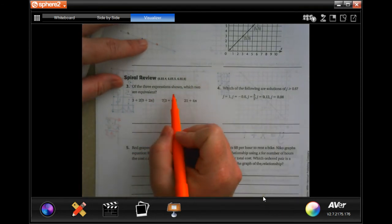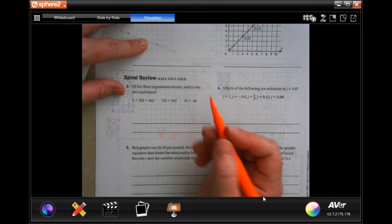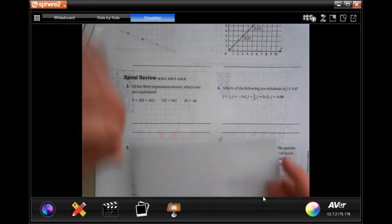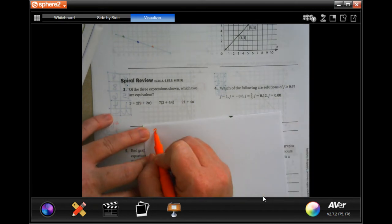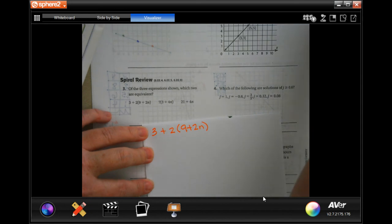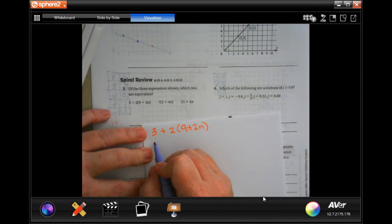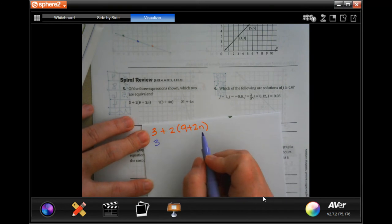It says of the three expressions shown, which two are equivalent. All right, so let's do it. Three plus two times open parenthesis nine plus two n close parenthesis. Let's do that one first.